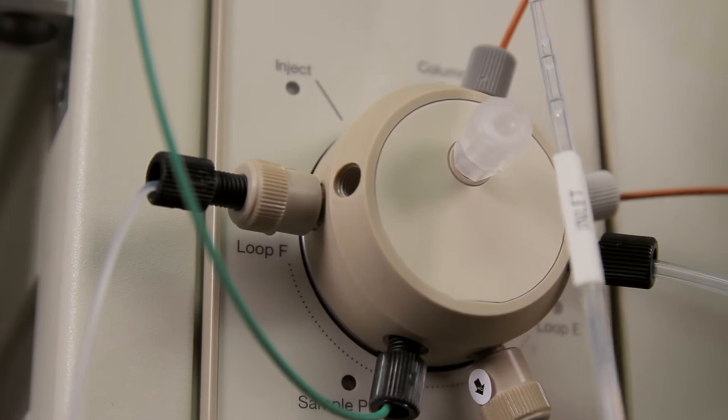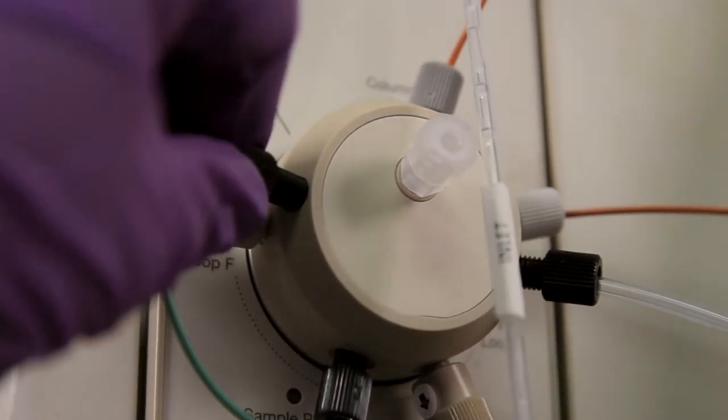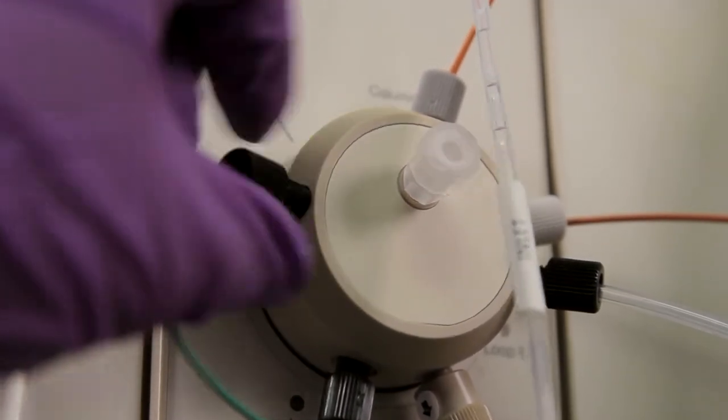Once all air has been eliminated, connect the 0 mil end of the Dyna Loop to Loop F of the injector.